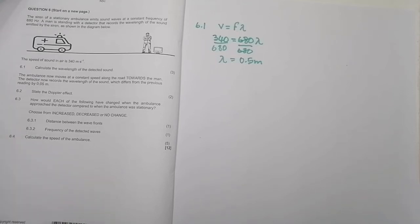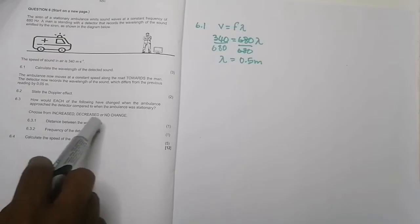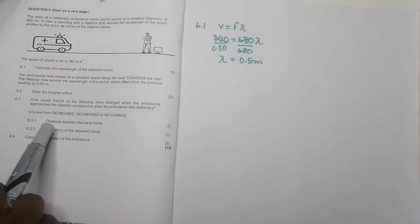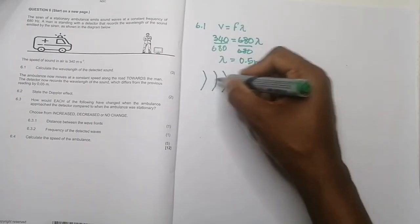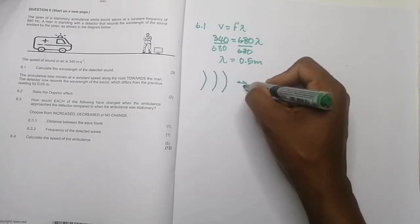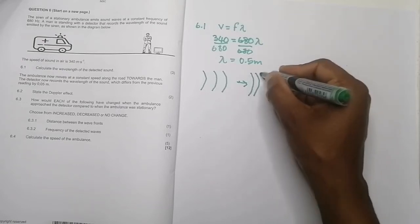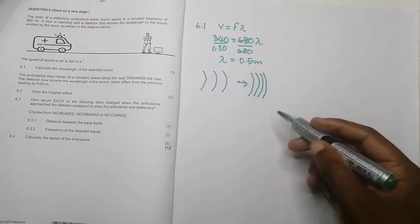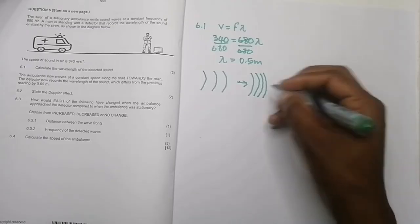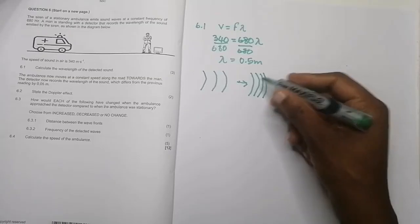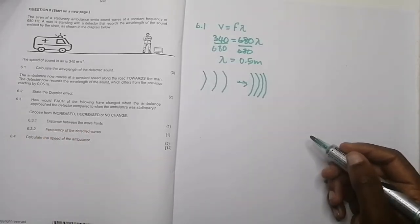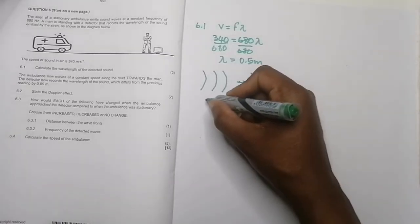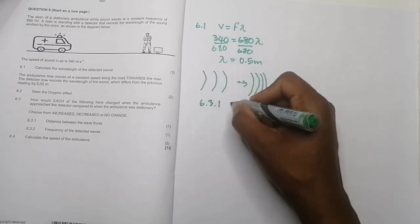Now let's look at how each of the following changed when the ambulance approached the detector compared to when it was stationary. They say choose: increase, decrease, or no change. For 6.3.1 — the distance between the wavefronts: before, the distance was 0.5 m, but once the ambulance starts moving toward us, that distance becomes shorter by 0.05, so the answer is decrease.